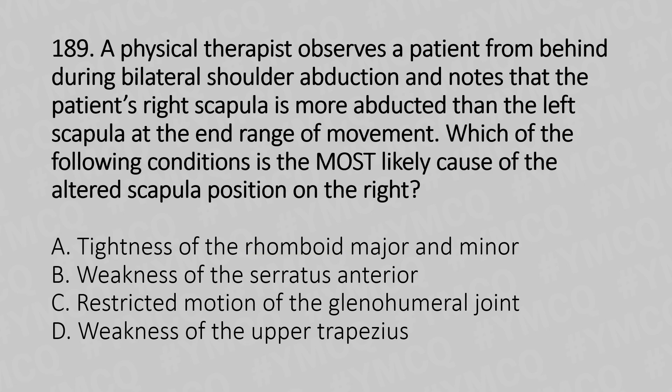Now let's move to question number 189. A physical therapist observes a patient from behind during bilateral shoulder abduction and notes that the patient's right scapula is more abducted than the left scapula at end range of motion. Which of the following conditions is most likely the cause of the altered scapula position on the right? Option A: tightness of the rhomboid major and minor. Option B: weakness of the serratus anterior. Option C: restricted motion of the glenohumeral joint. Option D: weakness of the upper trapezius.